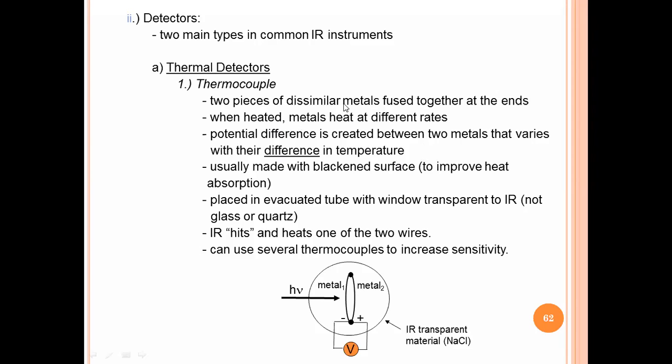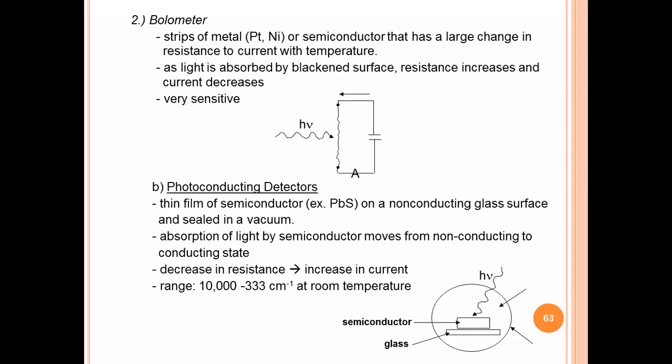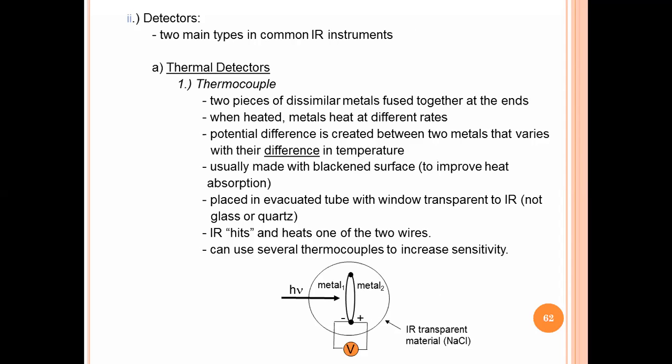Usually made with blackened surface to improve heat absorption. Placed in an evacuated tube. Two dissimilar metals, metal one and metal two, connected at their end, fused at their end, and placed in an evacuated tube with windows which are transparent to IR. These windows are not of glass or quartz because glass, even quartz material, will show absorption, IR absorption. IR hits one of the two wires. Can use several thermocouples to increase sensitivity. These are thermal detectors - thermocouple which works on the change in thermal conductivity.